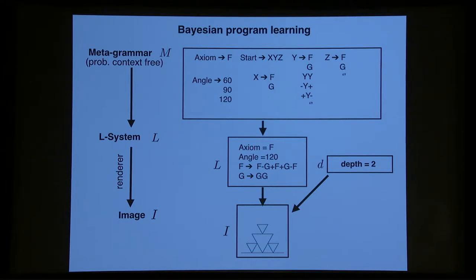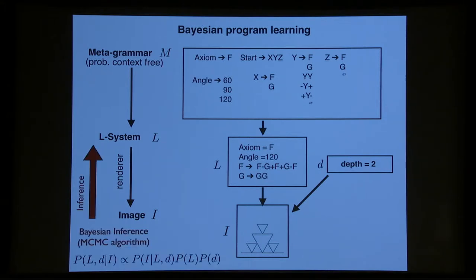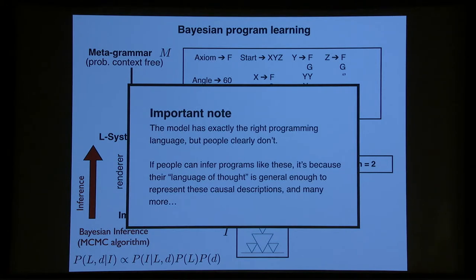And then with those two pieces, we can use Turtle and render it down into an image. So we have a full generative process that can produce a concept and produce images from the concept. And we use Bayesian inference where we can invert this and reason about what's the distribution on likely concepts given the data that we have. There's an important note here that we're going to compare people to this algorithm. And the algorithm has exactly the right programming language, and people clearly don't. So if people can infer programs like these, it's because their general programming language, their language of thought, is sufficiently general that it can learn these types of programs and many other things. And that's quite impressive. But certainly the model has a big advantage here.